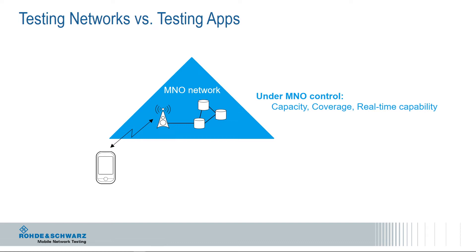You see here the smartphone connected to the base station and the core network. The scope is performance of the mobile network only, and the points of interest are data throughput, capacity, coverage, and real-time capability. We are looking for tests that measure exactly these network capabilities. In general, the strategy is always to measure from the user's perspective.